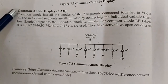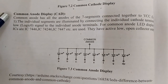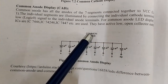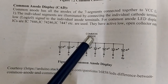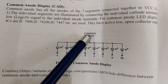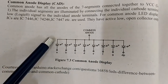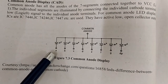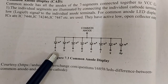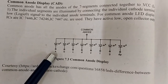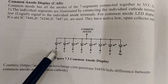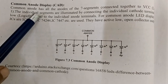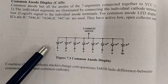In a common anode display, the anodes of each LED are connected together and one common terminal is brought out, which is connected to VCC. If we apply logic 0 to the cathode of an individual LED, that LED will turn on. If we apply logic 1, the LED segment will be in the off condition. In short, 0 turns on the LED and 1 turns it off. This type of display is used in the experiment we are going to perform.